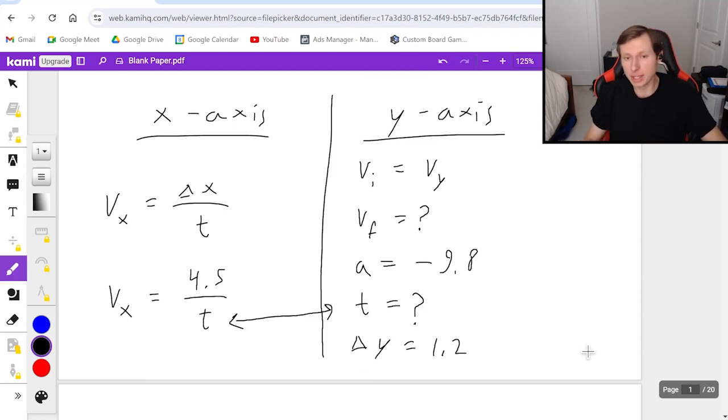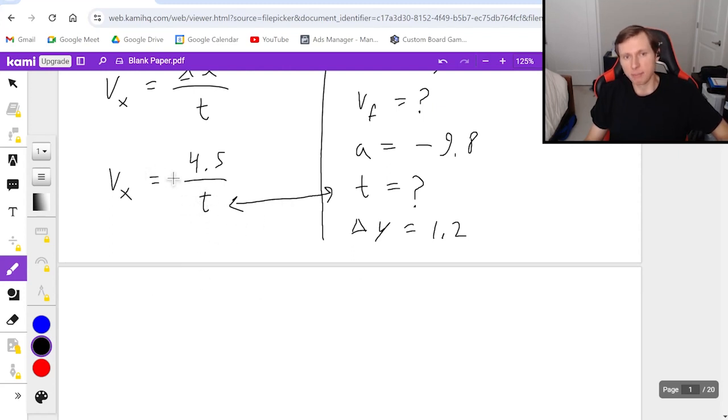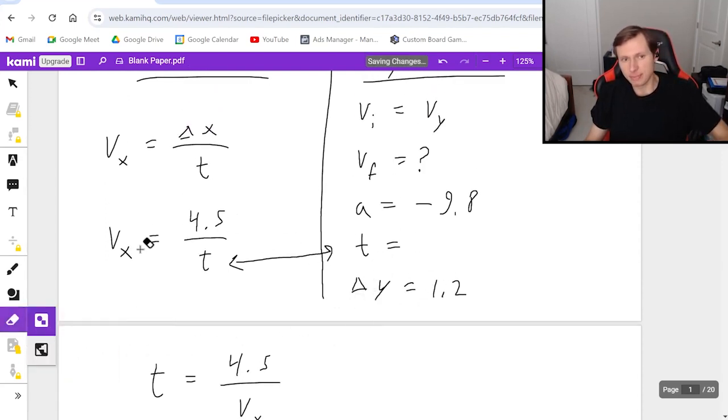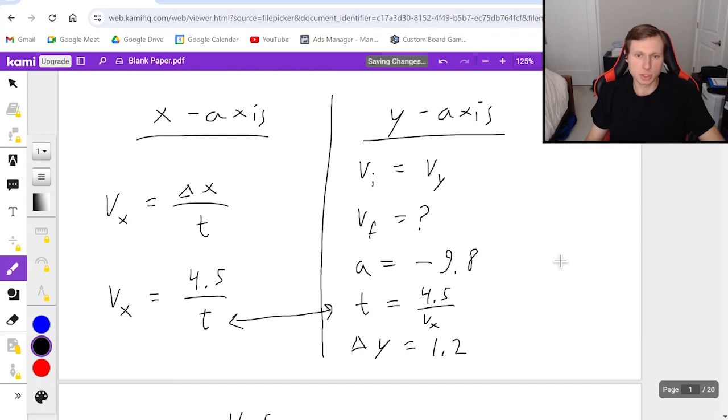And so I'll tell you the best way to solve this is to solve for t in the x-axis and plug it in the y-axis. So what that means is if I solve for t, multiply t on both sides and divide by v_x, I get t equals 4.5 divided by v_x. Note we still don't know what v_x is. I don't care. It's fine for right now. Let me plug that in right here for time. It's 4.5 divided by v_x. And now I have enough information to solve for whatever I want.